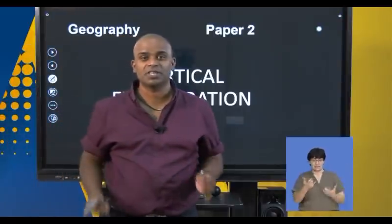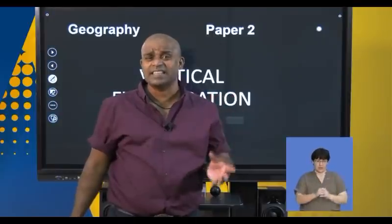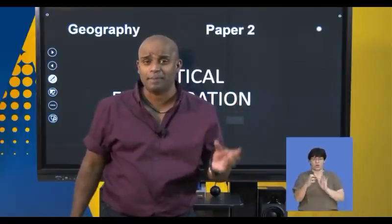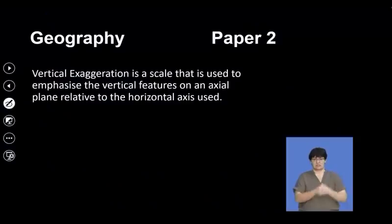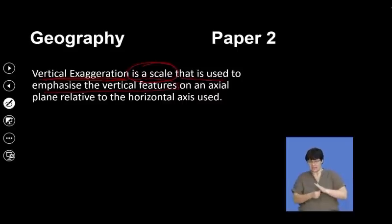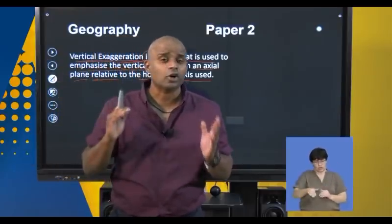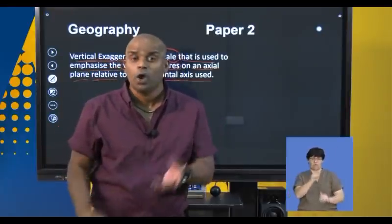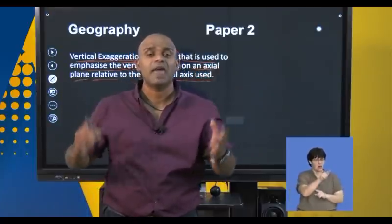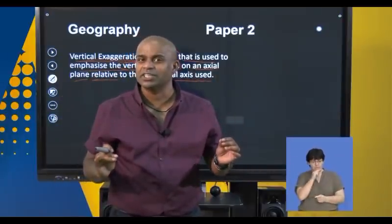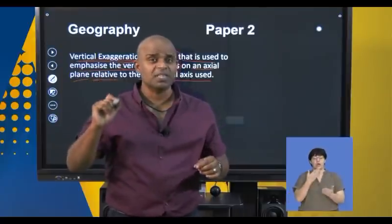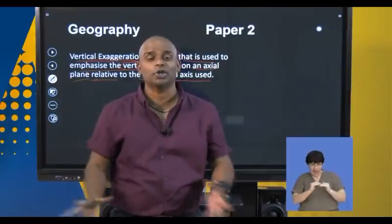The next calculation is vertical exaggeration. This is standardized according to the scales used on your topographic map — that is 1:50,000 — and an exaggerated scale depending on the construct of your cross-section. Vertical exaggeration is a scale used to emphasize the vertical features on a plane relative to the horizontal axis. When looking at a cross-section, which is a reduced version of reality, vertical exaggeration tells you by how much that cross-section is exaggerated from the real feature.